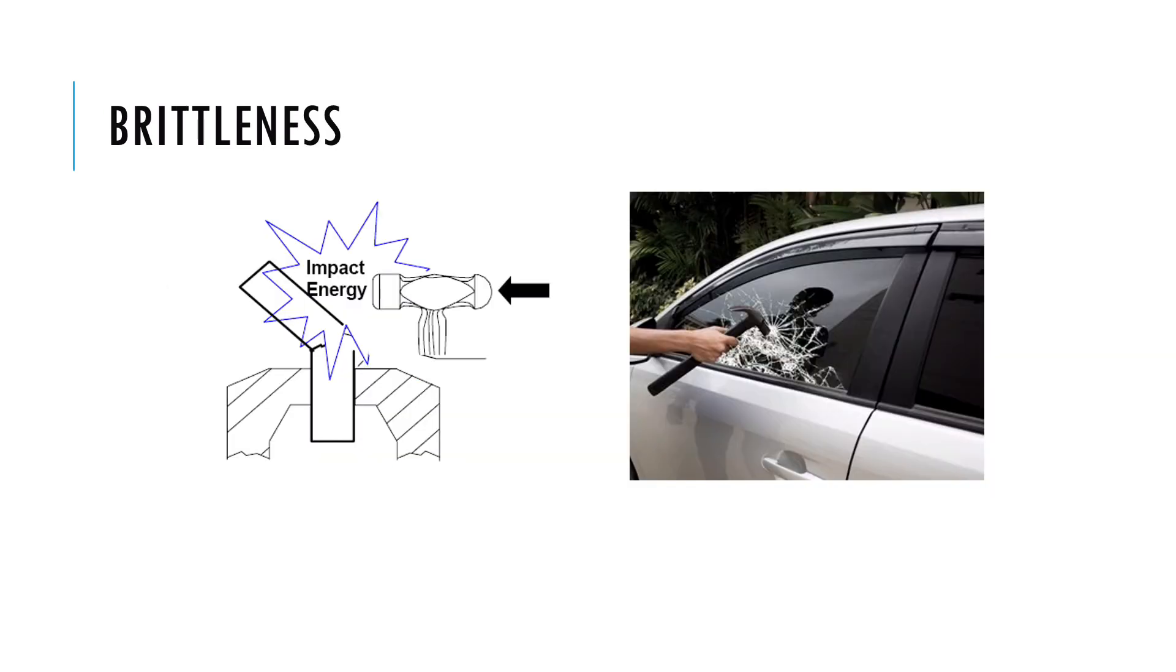Brittleness is the opposite of ductility. A material is brittle if it has little ability to deform before fracture. It means it breaks but doesn't change shape. Brittleness is a problem in engineering, as most of the time we do not want things to break easily. Many hard materials are brittle.